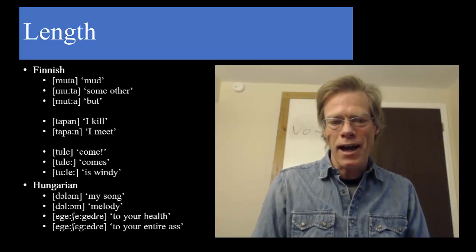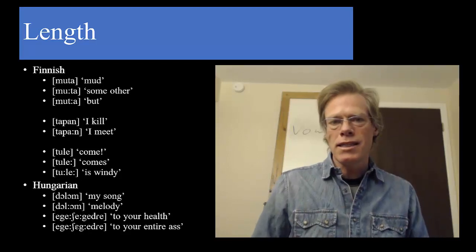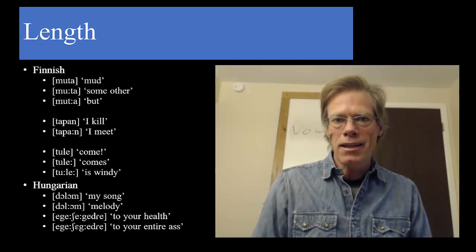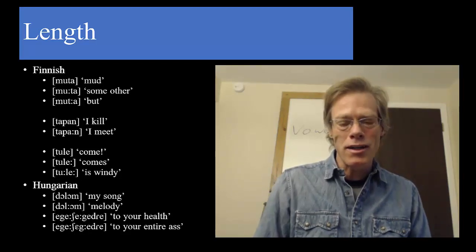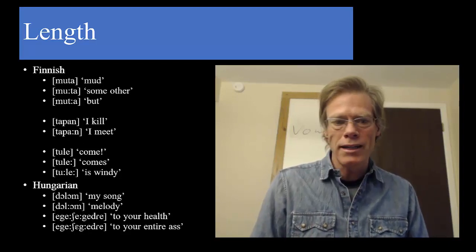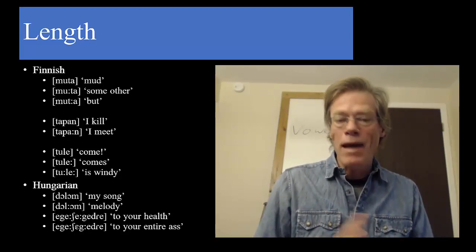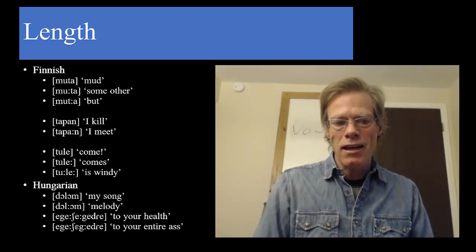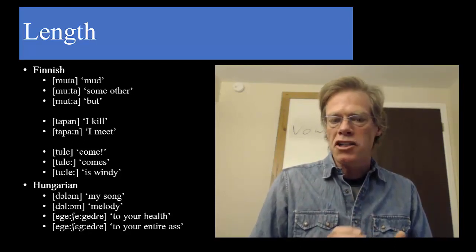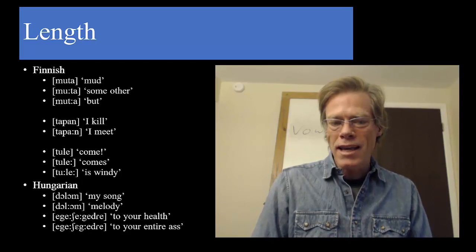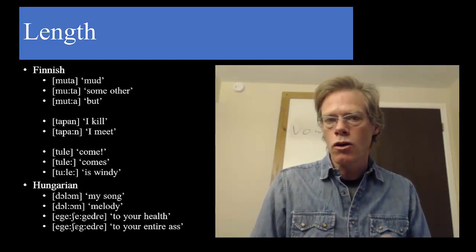One I always find funny: when somebody sneezes or you're giving a toast in Hungarian, you say 'egészségedre,' which has two long A sounds — the second and third A's are pronounced long. But when foreigners learning Hungarian mix up those long versus short vowels, they may make the consonant long instead of the third vowel, so it comes out differently. And if you say that, it means something very different — instead of 'to your health,' it means 'to your whole ass.'